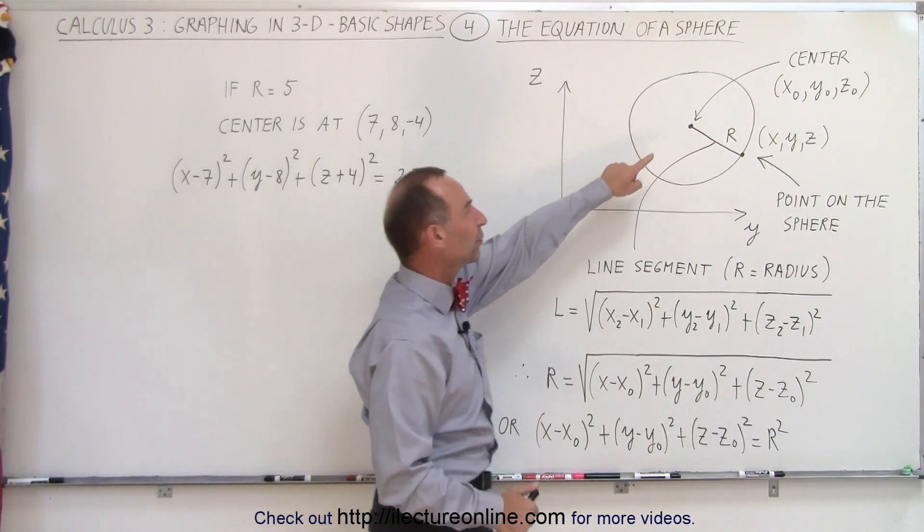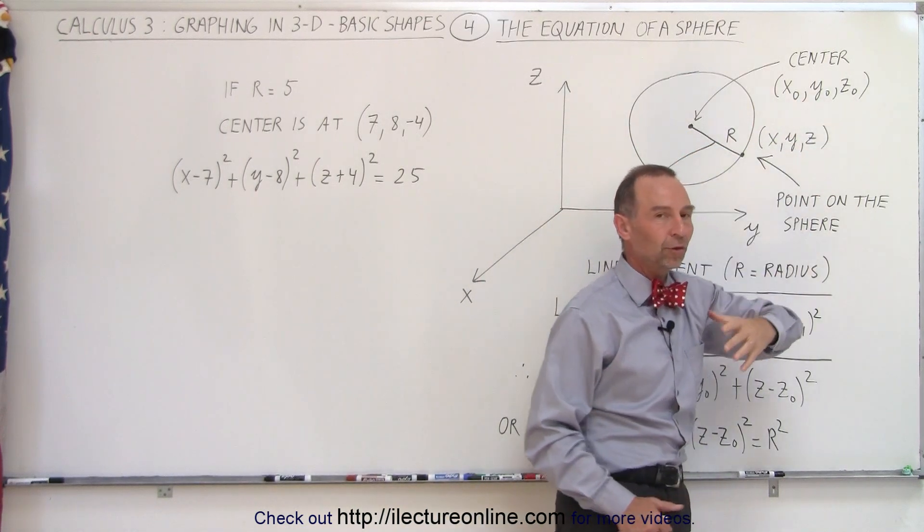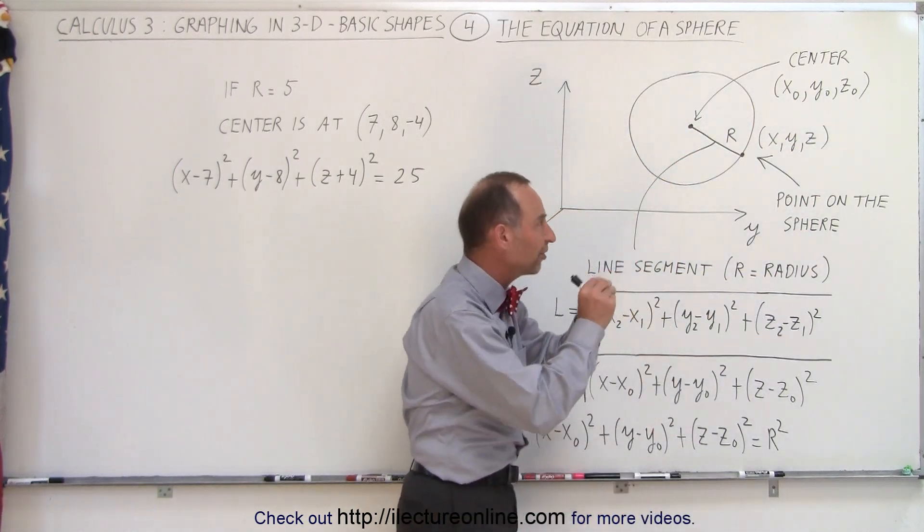So let's assume that the center of the sphere is located at x sub-naught, y sub-naught, z sub-naught. Those are the x, y, z coordinates of the center.